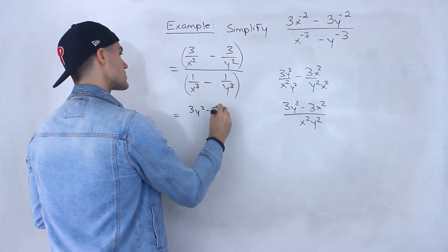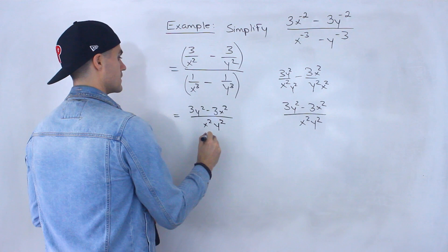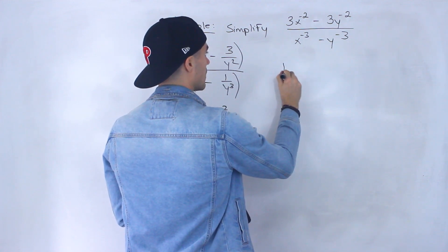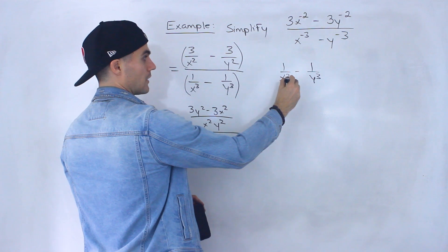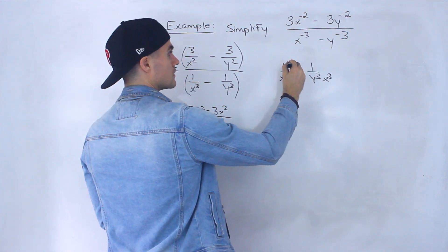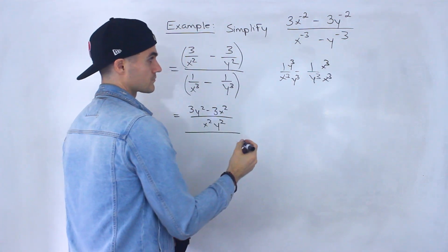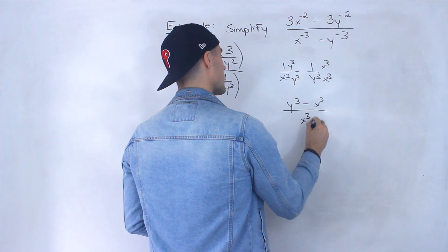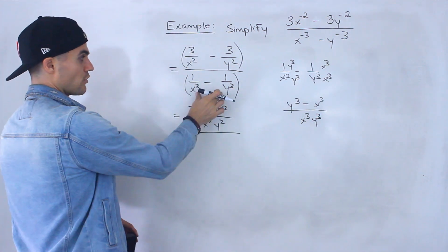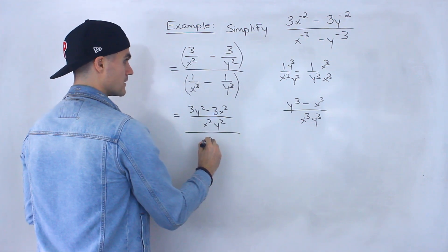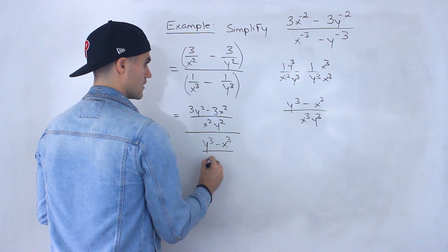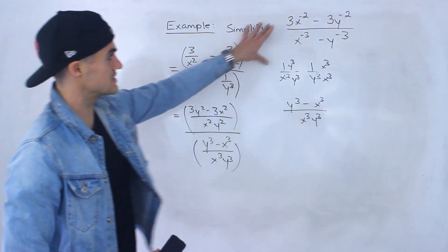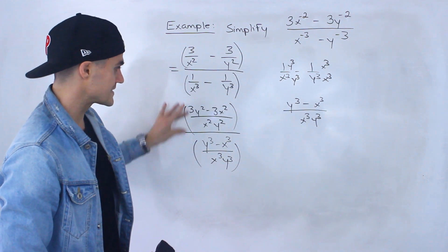So the numerator simplifies to that single fraction. Now I'll plug that in for the numerator. We'd have 3y squared minus 3x squared over x squared y squared, divided by 1 over x cubed minus 1 over y cubed. For the denominator, I multiply the first term by y cubed and the second by x cubed as a common denominator, giving y cubed minus x cubed, all over x cubed y cubed.